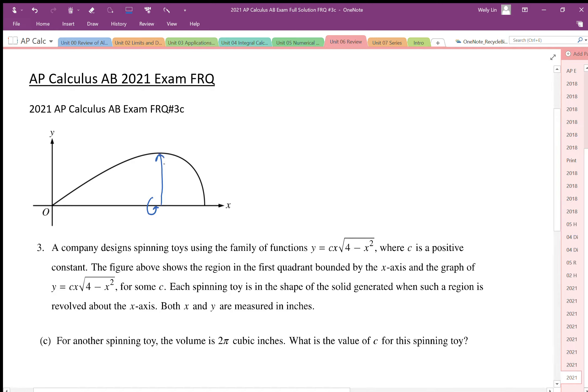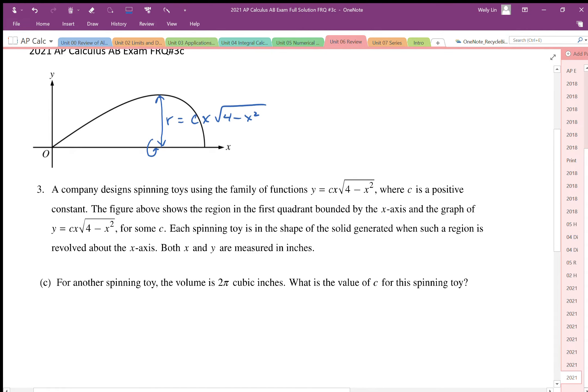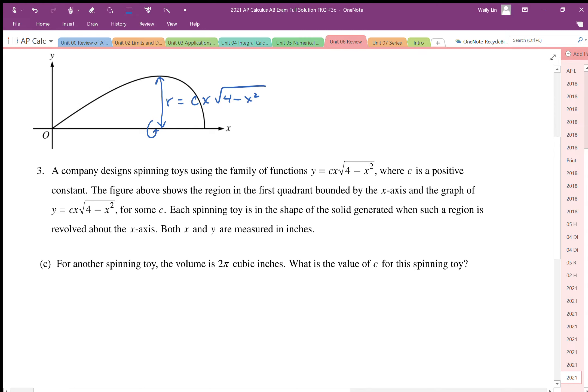So this will represent the radius, and the radius is going to be cx√(4 - x²). Okay, so that represents the radius and we're going to find the volume of this spinning object by using πr² times some thickness, and we're going to call that thickness dx.